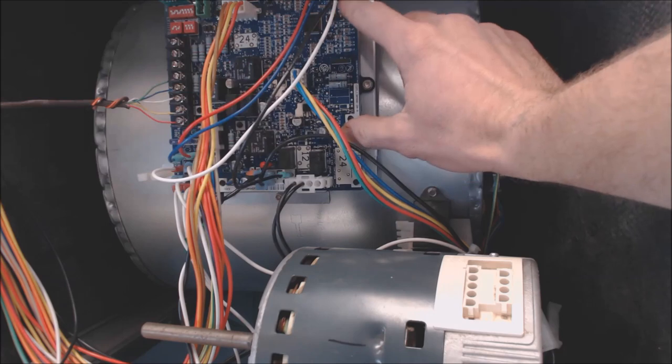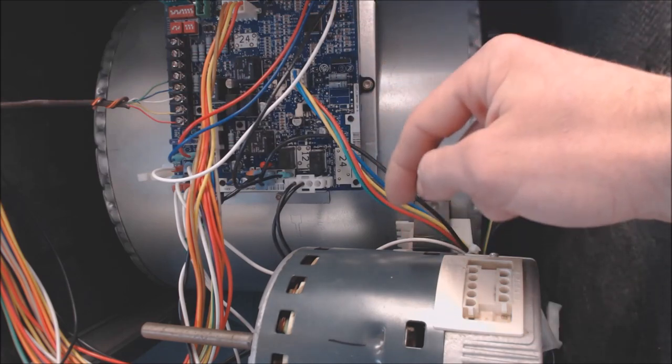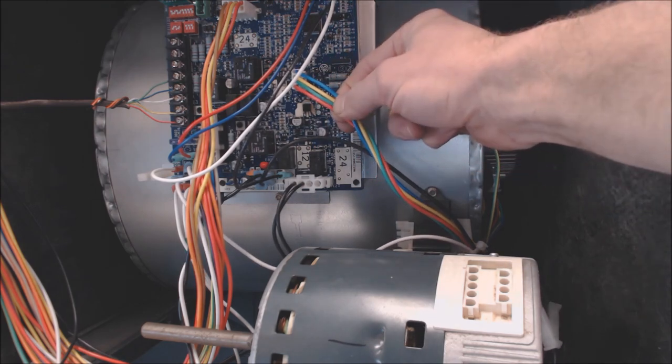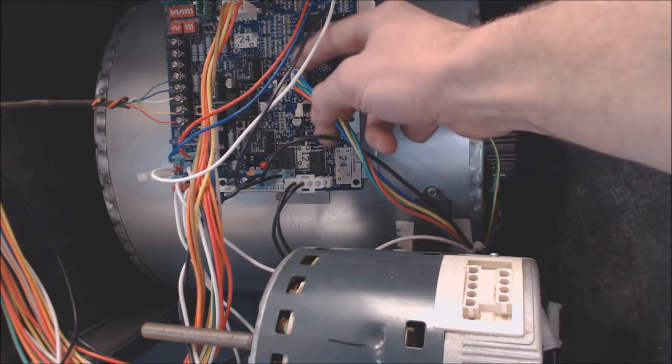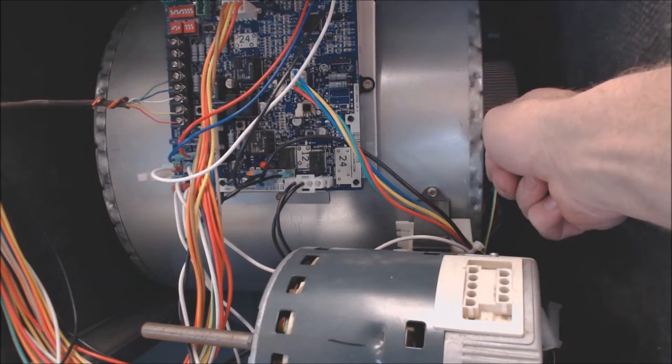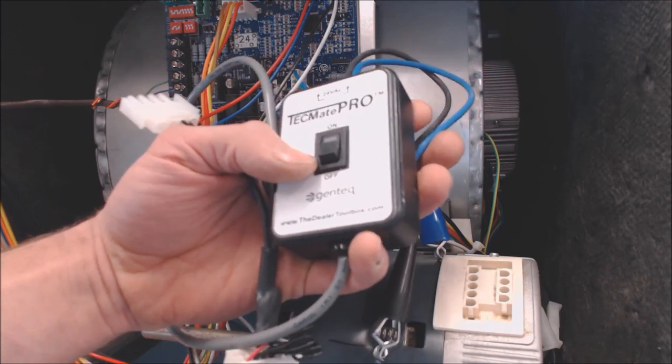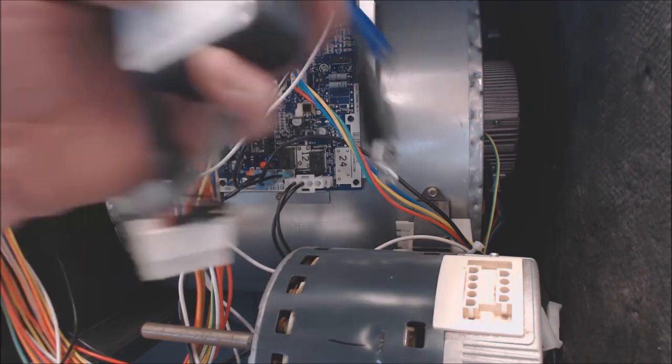So the control board, in this case, since this is an ECM 3.0, talks to the motor with DC millivolts. So this is the plug right here, and what we're going to do is disconnect that connection back there. We're going to turn it on with the TechMate Pro, and then I'm going to also show you how to do it without this.